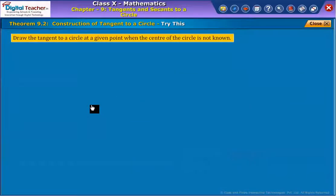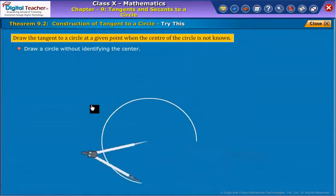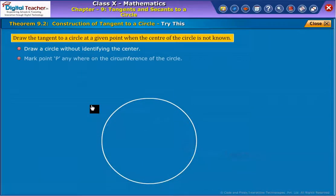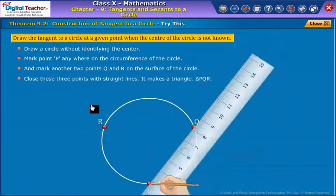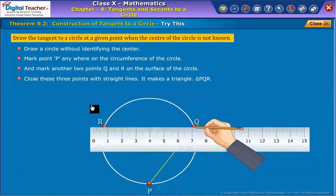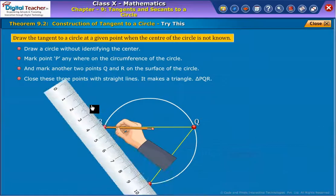Try the following steps to draw the tangent to a circle at a given point when the center of the circle is not known. Draw a circle without identifying the center. Mark point P anywhere on the circumference of the circle and mark another two points Q and R on the surface of the circle. Close these three points with straight lines. It makes a triangle, triangle PQR.